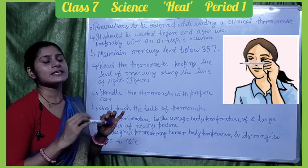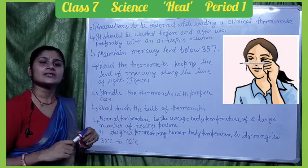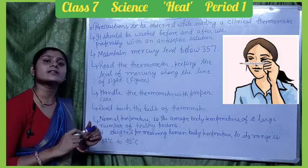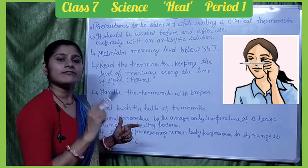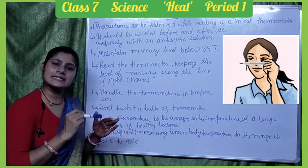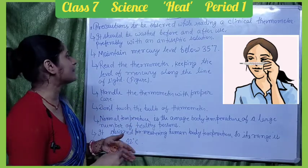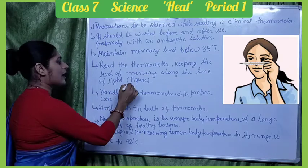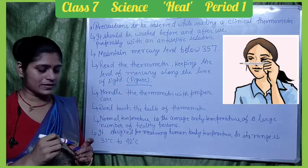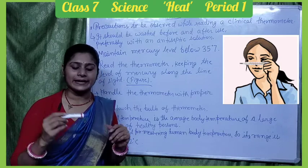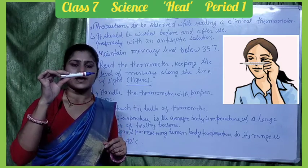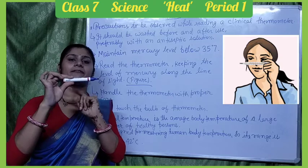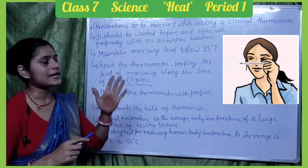We maintain mercury below 35 degrees Celsius because the human body temperature range is 35 to 42 degrees Celsius. When reading the thermometer, hold it at eye level along the line of sight so you can see the mercury accurately.